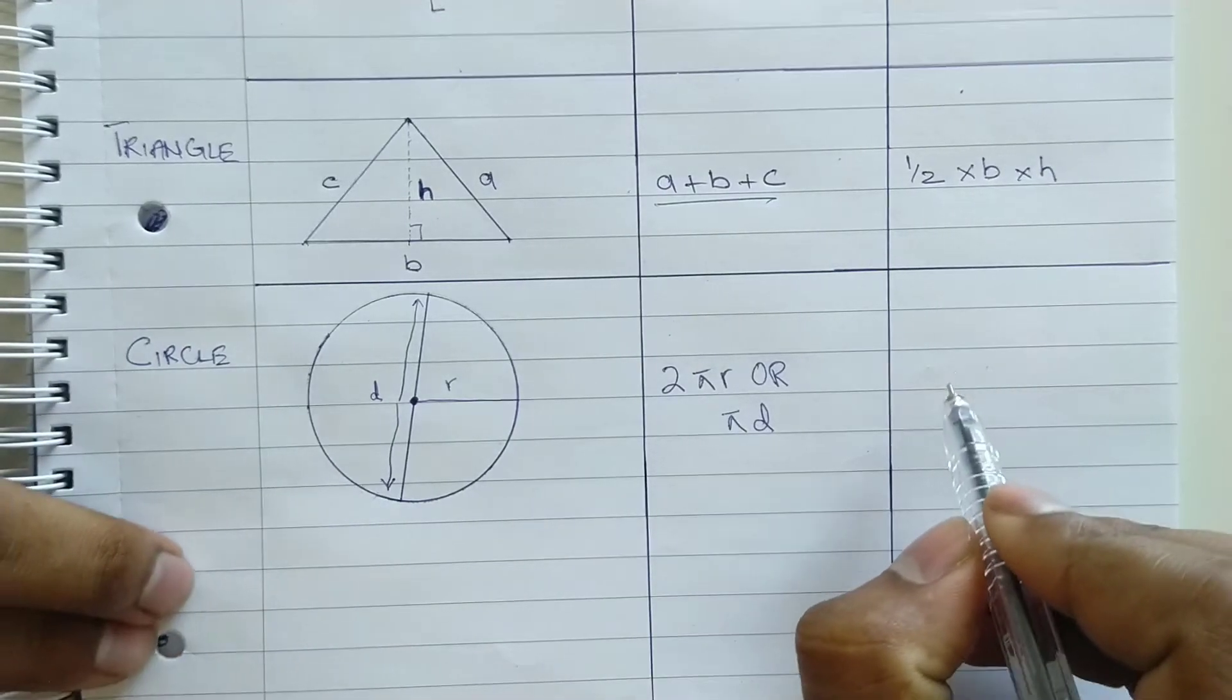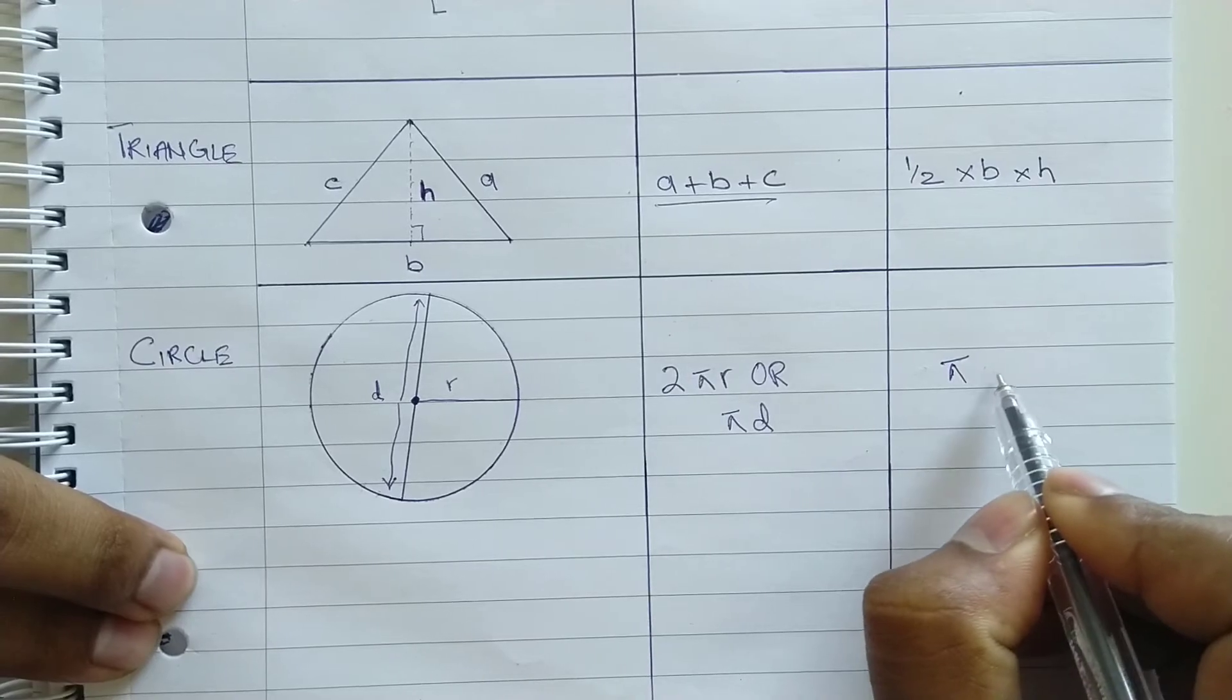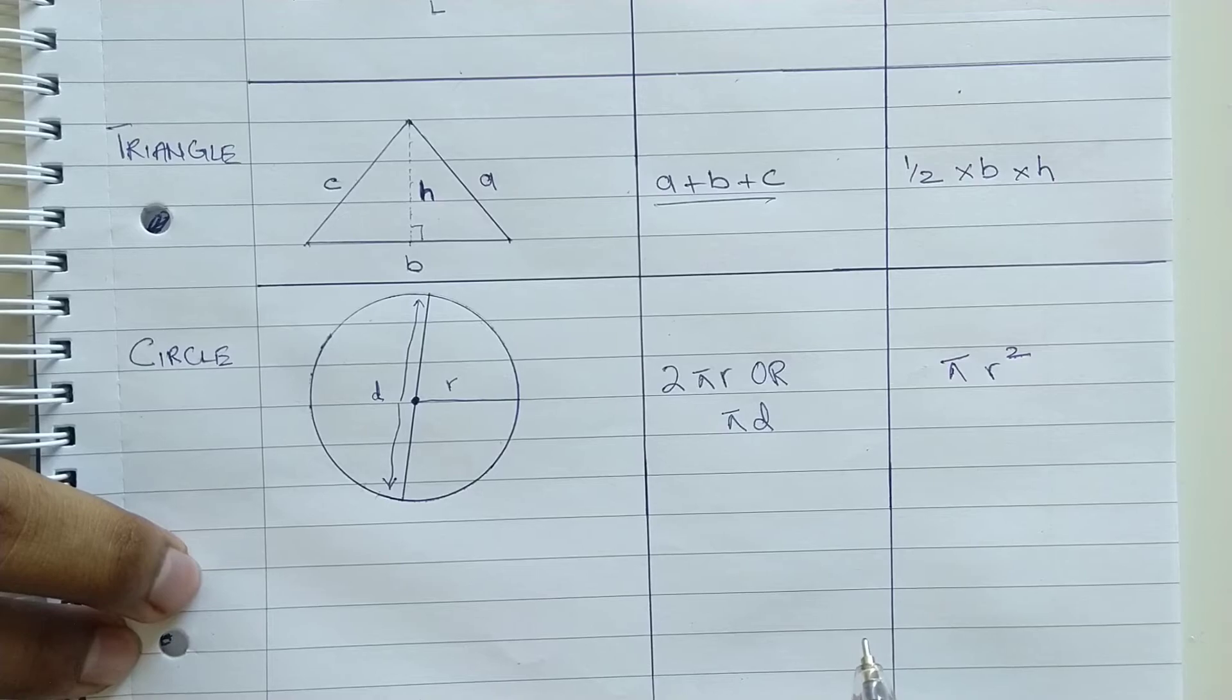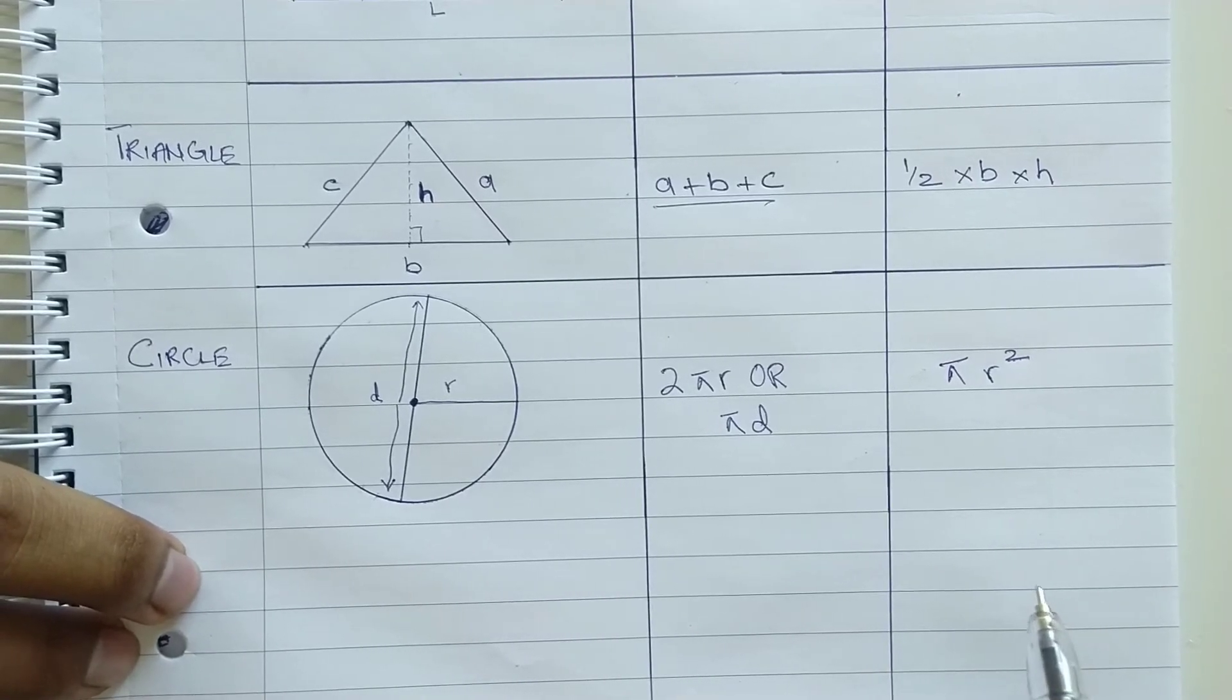To calculate the area of a circle, the formula is pi R square where the value of pi can be used as 3.142 or 22 upon 7 and R is the radius of a circle.